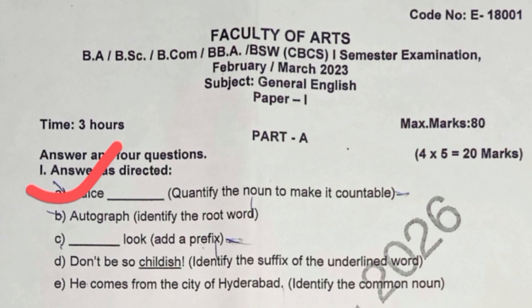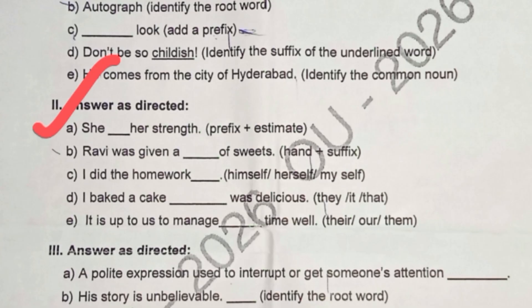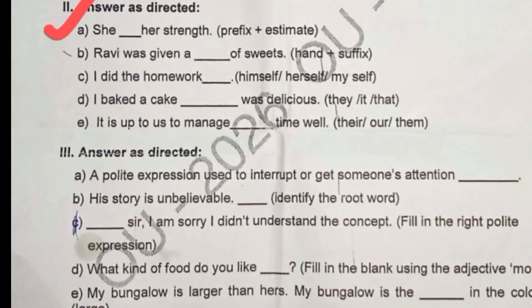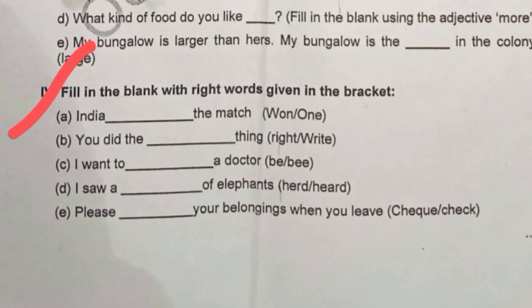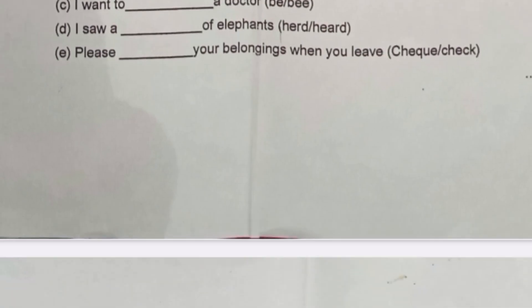In Part A, the first bit is a grammar topic, and the second bit is also a grammar topic covering prefix and suffix. The third bit covers root words — everything under grammar topics. For the fourth bit, pause the video and take a screenshot, or I will upload the question paper PDF in the Telegram group.